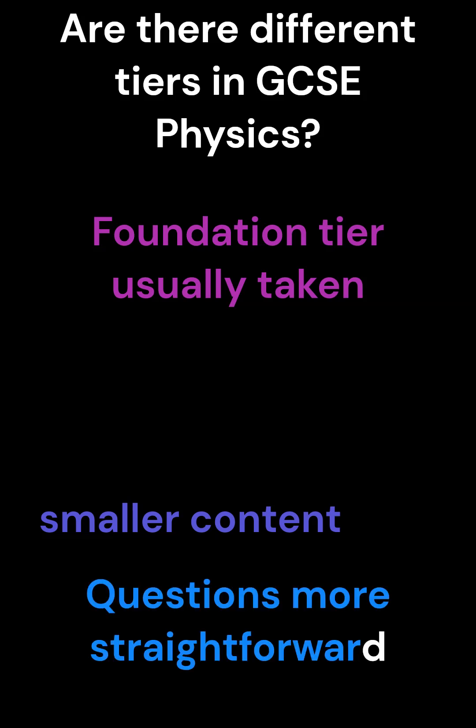Are there different tiers in GCSE physics? Yes, like maths and the other sciences, there is a foundation tier and a higher tier. Usually students take the foundation tier as the content is slightly smaller and the questions are asked in a more straightforward manner. You can gain a grade five by taking the foundation tier.